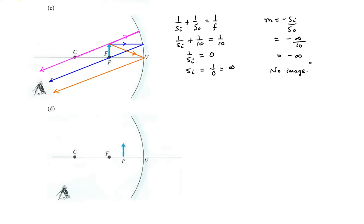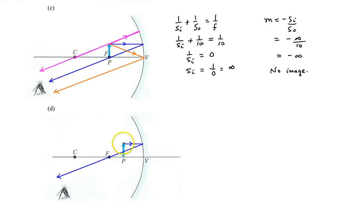Now let's move on to Part D — what happens if you put the object between the focus and the vertex? Let's construct the ray diagram. The first ray goes from the top of the object toward the mirror parallel to the principal axis, and then reflects through the focus. The second ray goes from the top of the object not toward the focus, but along a line that comes from the focus — so extended from the focus through the object, then reflecting from the mirror going parallel to the principal axis.